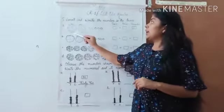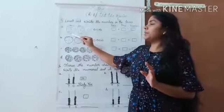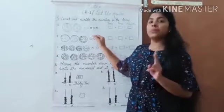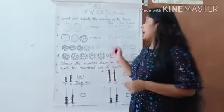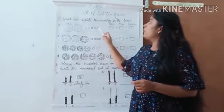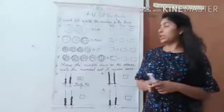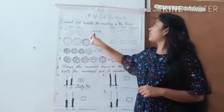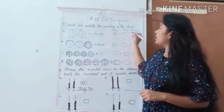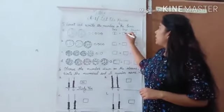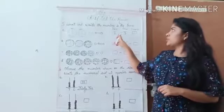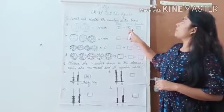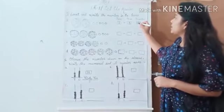And 10 balls makes 1 circle. So, it means 10 balls means 1 tens. 2 circles means 2 tens. And 1, 2, 3, 4, 5 ones. So, here we can write that 2 tens and 5 ones. 2 is on tens space. It means here 20 plus 5. Total number is 25.